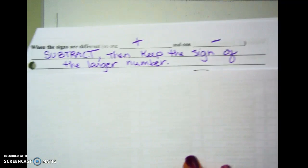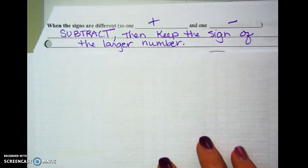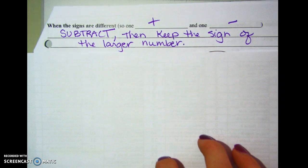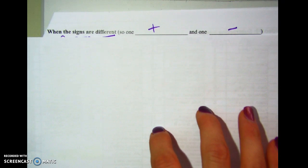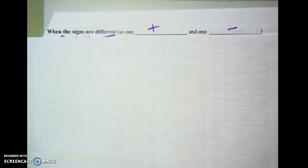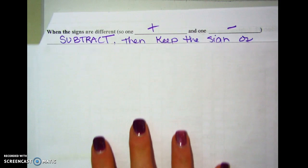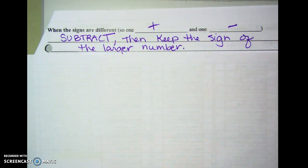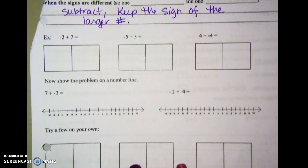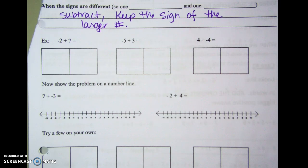Now flip your paper over to look at adding when the signs are different — meaning I'm adding two numbers where one is positive and one is negative. It doesn't matter which one comes first or the order they're in; I just have one of each. Here's the rule: we're actually going to subtract the numbers and keep the sign of whichever one was bigger.